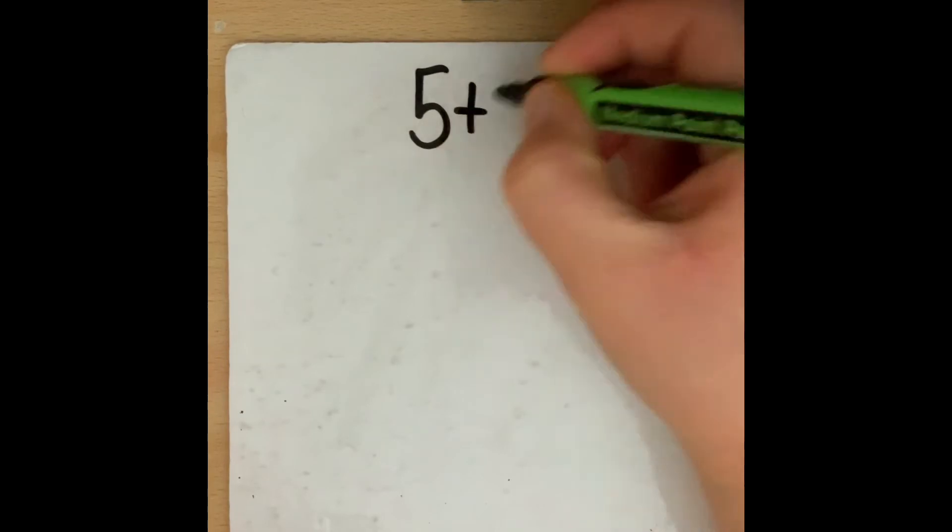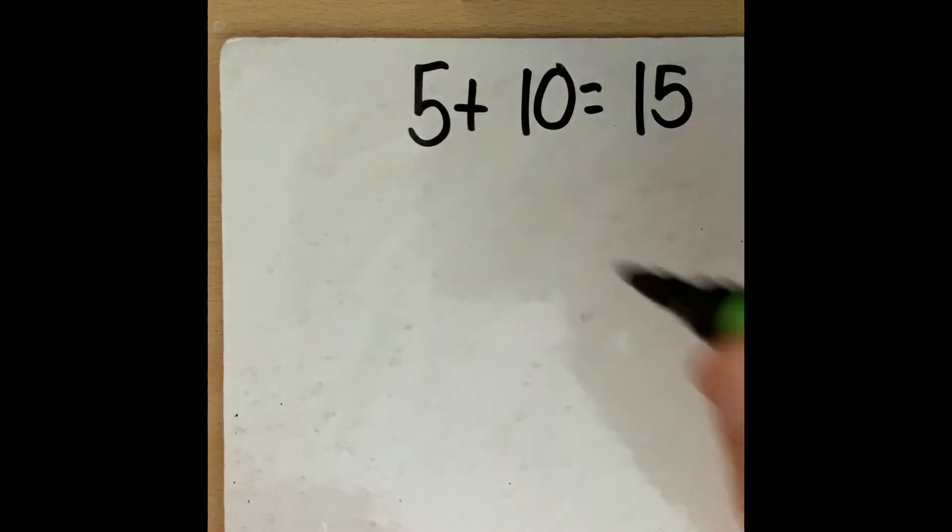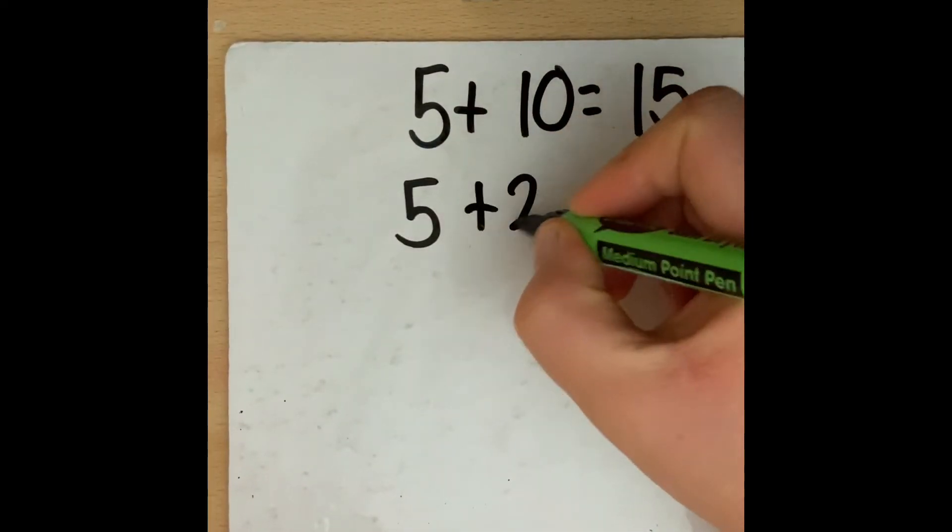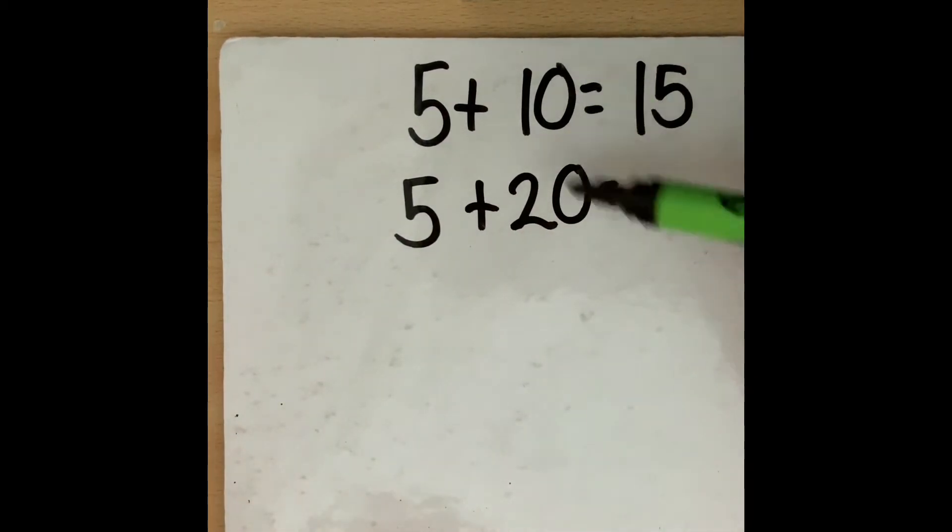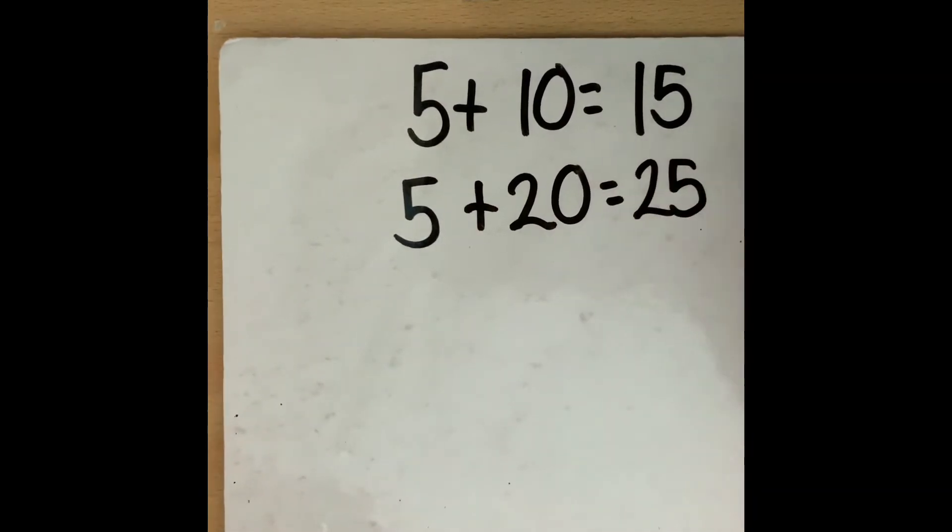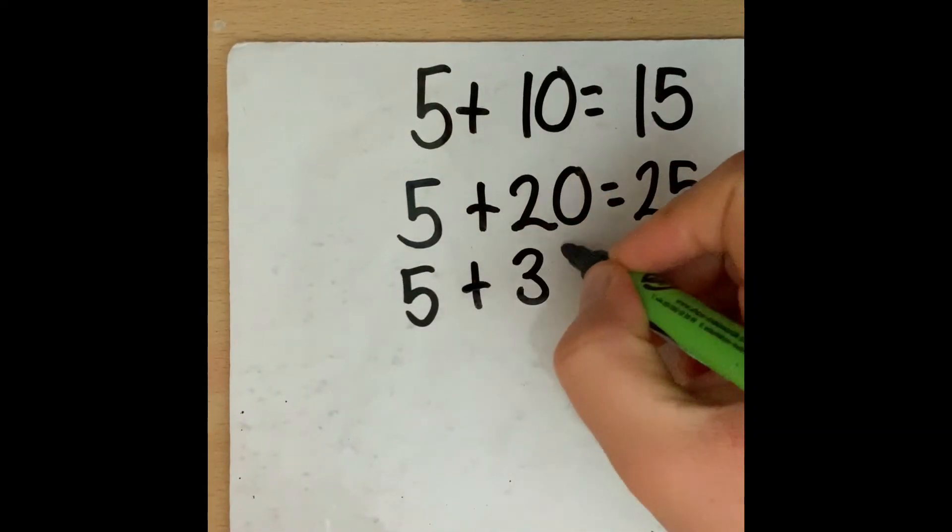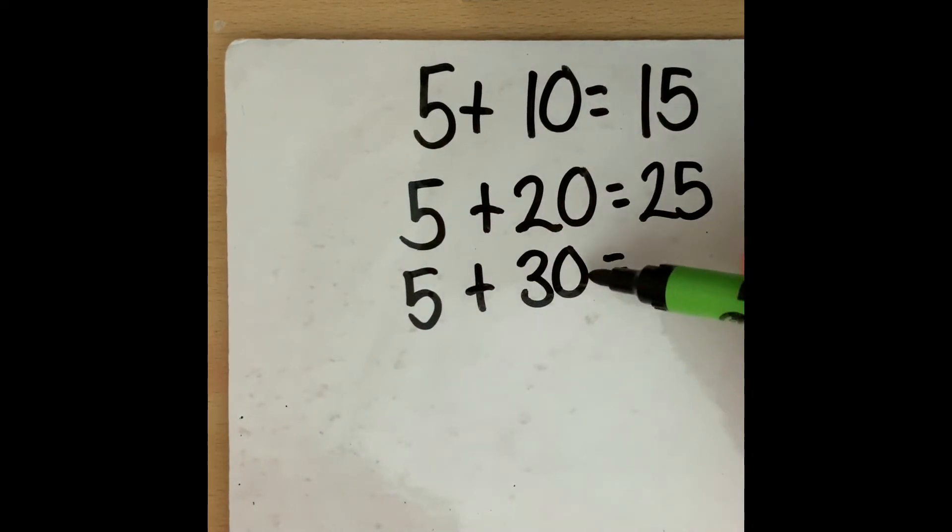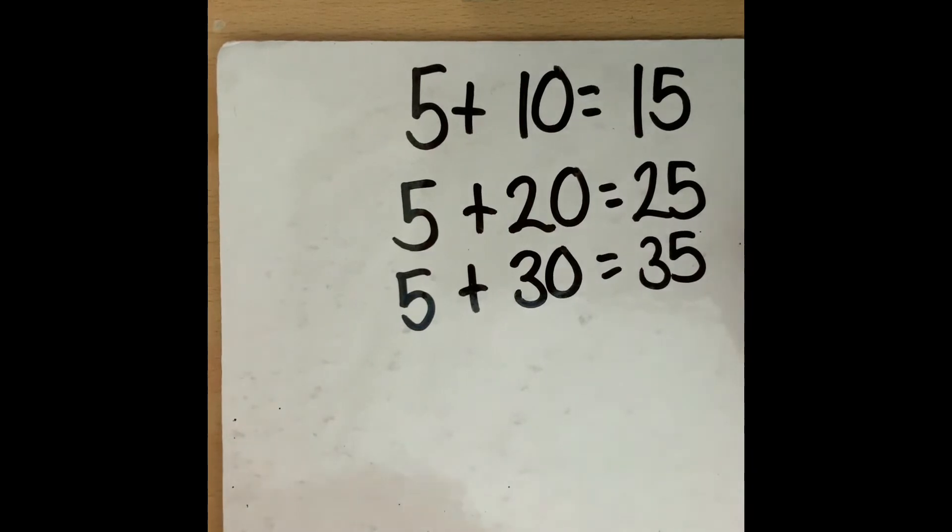If I have 5 add 10 I know it's 15. If I add 5 add 20 I know that it's going to be, 10 is only 10 less than 20, so effectively I'm only adding an extra 10 to 15, like so. So if I have patterns like this I know that 30 is only 10 more than 20. So 25 add another 10 is 35. So there is a pattern. The answers are going up in 10s.